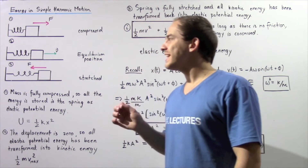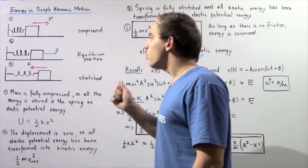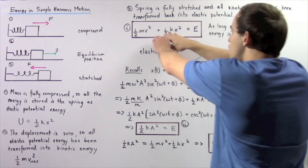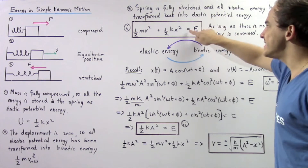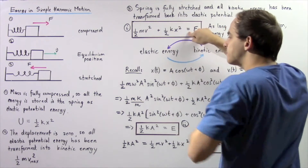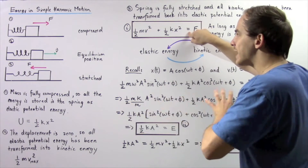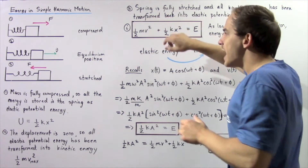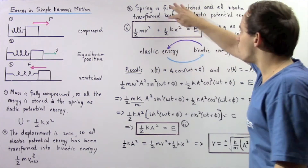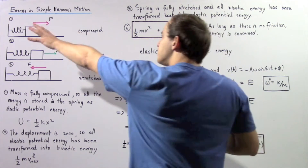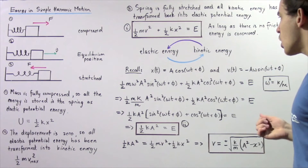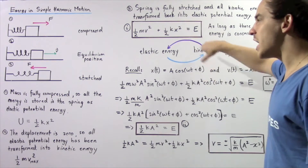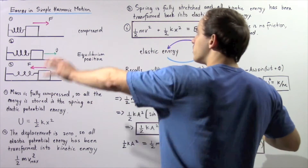As long as there is no friction acting on the mass and spring, the total energy of the system is conserved. The total energy equals the sum of kinetic energy and elastic potential energy as the object oscillates. At position 1, kinetic energy is zero, so total energy is simply one-half k times x squared, where x is the amplitude. Elastic potential energy converts to kinetic, then back to elastic, and the cycle continues in simple harmonic motion.